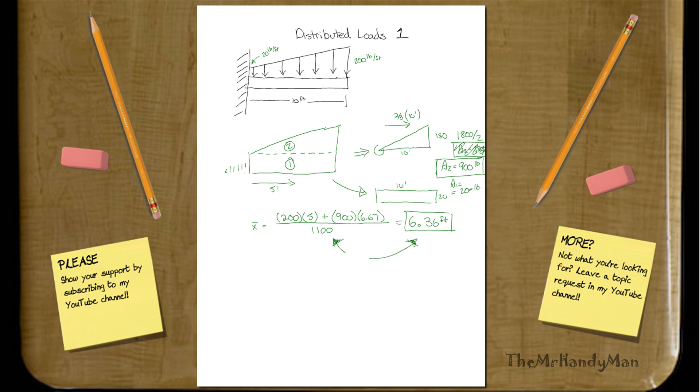And so what would that look like? You have your wall here, you would go out 6.36 feet, and that's where you would put your force that was going downwards, at 1,100 pounds.